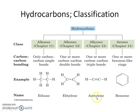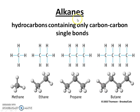Alkynes are compounds which contain a carbon-carbon triple bond; ethyne is the simplest example. Arenes are known as aromatic compounds — benzene, naphthalene, and anthracene are examples. As stated earlier, hydrocarbons containing only carbon-carbon single bonds are known as alkanes. The basic structures of methane and ethane are shown.